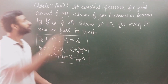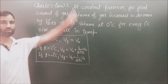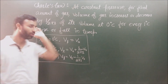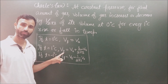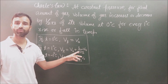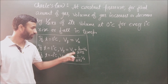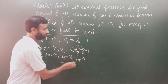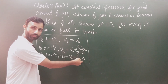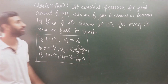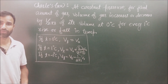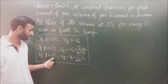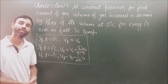This is the alternative definition of Charles' Law: at constant pressure for a fixed amount of gas, the volume of the gas increases or decreases by 1/273 of its volume at 0°C for every 1°C rise or fall in temperature.